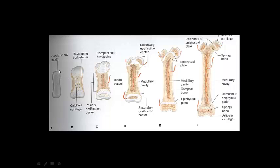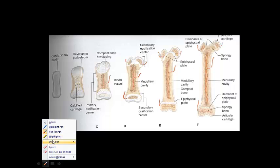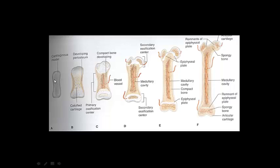Let's review what we learned. Here's your hyaline cartilage model — that's our framework. Then you get the developing periosteum around the diaphysis. From that periosteum, the blood supply enters the diaphysis where you get your primary ossification center — this is where we start to put down bone.